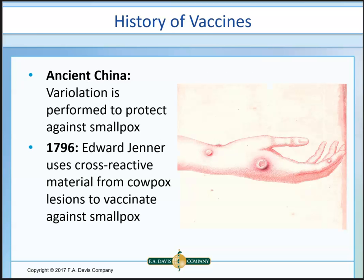How did all this start? In ancient China, a process called variolation was performed to protect against smallpox — this actually predates Jenner. Edward Jenner in 1796 observed that milkmaids who got cowpox on their hands didn't get smallpox. He obtained material from cowpox lesions, scratched it onto people's skin, and that gave them protection against smallpox — the first true vaccination.